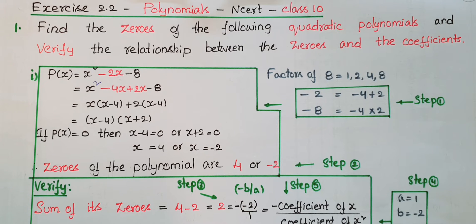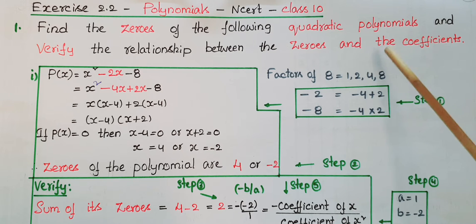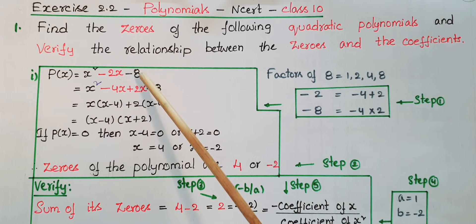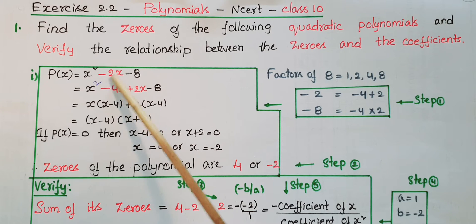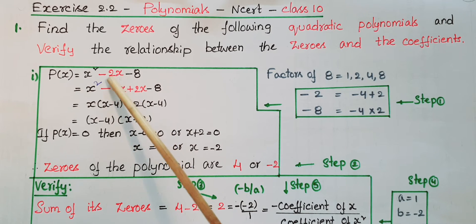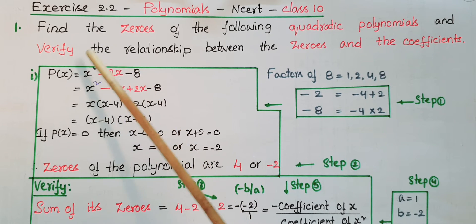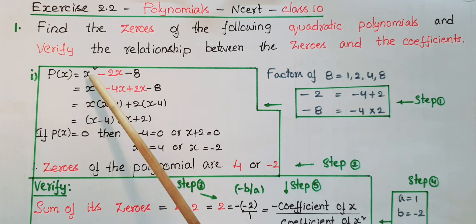Now I will solve Problem 1 from Exercise 2.2 from NCERT: find the zeros of the following quadratic polynomials and verify the relationship between the zeros and the coefficients. The first polynomial is p(x) = x² - 2x - 8. You have to factorize by splitting the middle term -2x. You need two numbers whose product is 1 × (-8) = -8.